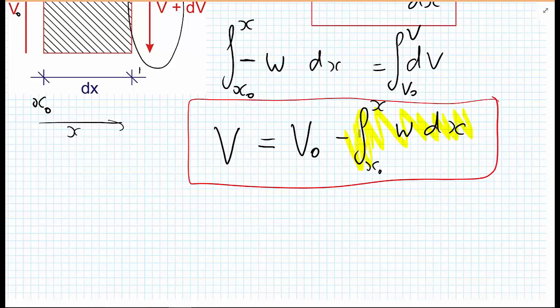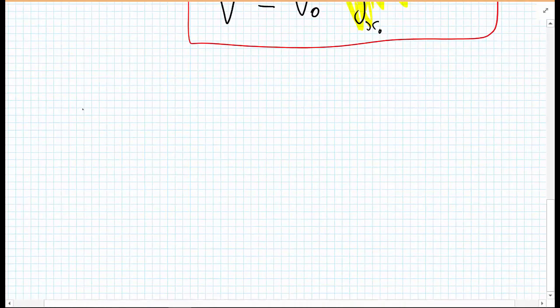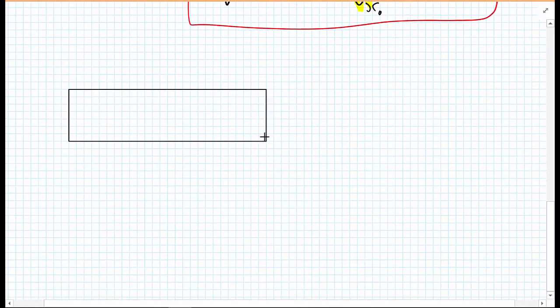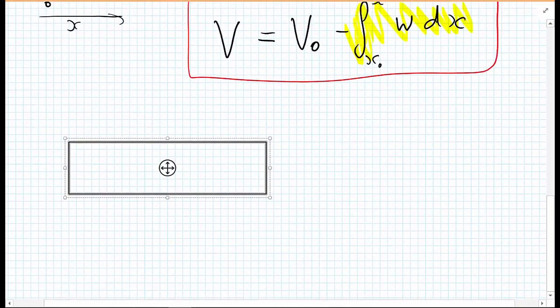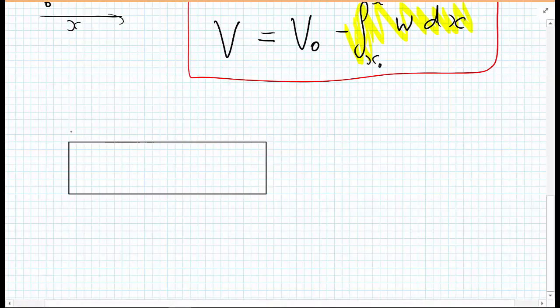And I think it's useful to illustrate what we mean by way of an example. And we'll go back to an example that we've examined previously. We had a beam of some sort.